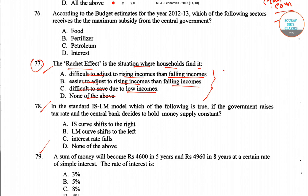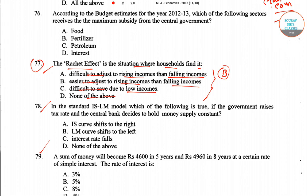Out of these four options, the right answer would be option B — that is, the ratchet effect is the situation where a household finds it easier to adjust to rising income than falling income. So for question number 77, the right answer is option B.